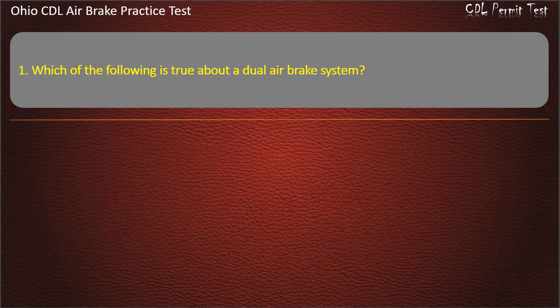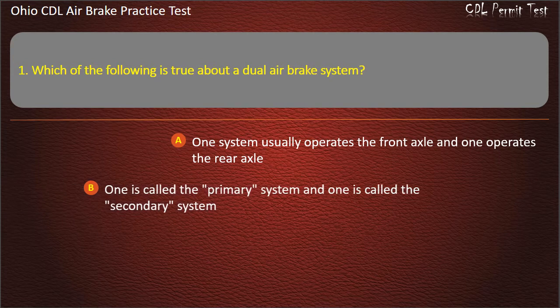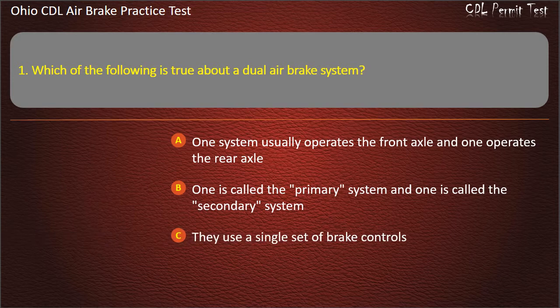Question 1: Which of the following is true about a dual air brake system? One system usually operates the front axle and one operates the rear axle. One is called the primary system and one is called the secondary system. They use a single set of brake controls. All of the above. Answer: All of the above.